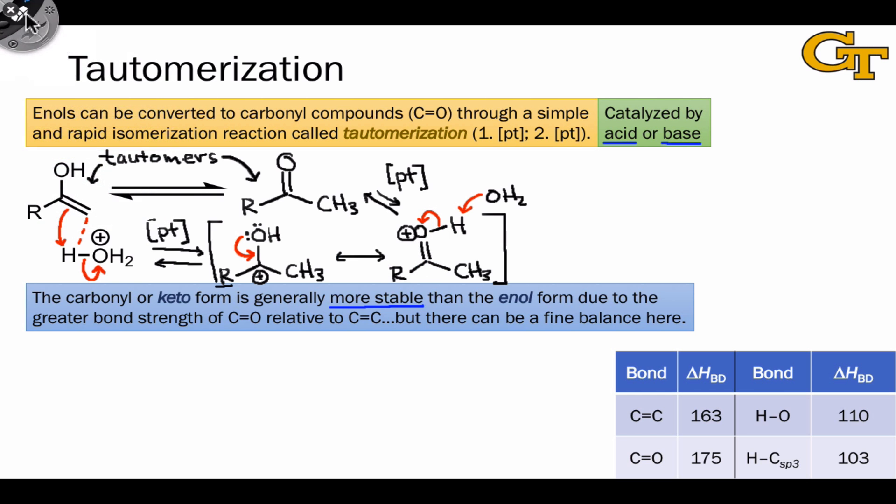To understand the reason why the keto form is favored, one good place to start is with bond dissociation enthalpies. We can calculate a rough delta H for the change in enthalpy in going from the enol to the keto form by adding up the bond dissociation enthalpies of the bonds broken in this process, the CC double bond and the OH bond, and subtracting from that the bond dissociation enthalpies of the bonds made, the carbon-oxygen double bond and the SP3 CH bond.